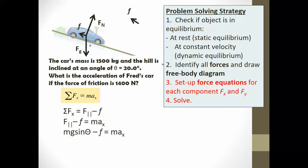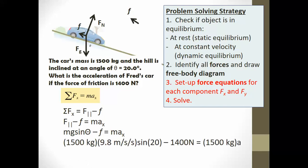Plugging in numbers: mass is 1,500 kg, gravity is 9.8 m/s², the angle is 20 degrees, and the force of friction is 1,400 newtons. So: 1500 × 9.8 × sin(20°) − 1400 = 1500 × a. Solving for a, we get 2.4 meters per second squared.